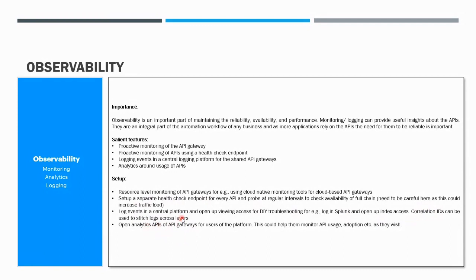Each gateway generates analytics around API usage — which APIs are most popular and which consumers use which APIs. Management APIs are available to fetch these statistics from the management layer. Opening up these analytics APIs toward providers can be very useful: for open APIs it enables monetization strategies and insights into API usage, and if already monetizing, it can help do reconciliation and generate bills for customers.